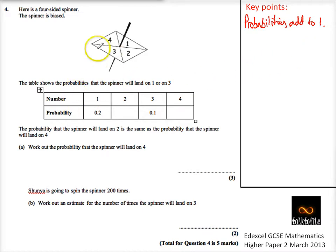If we look at this here, this is a spinner. It's got one, two, three, four, the numbers in here. We know the total of all of these things has got to be one.